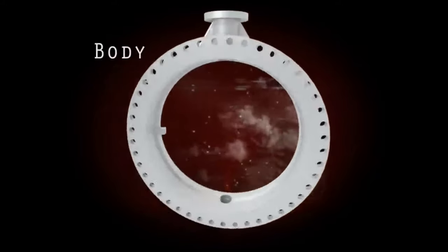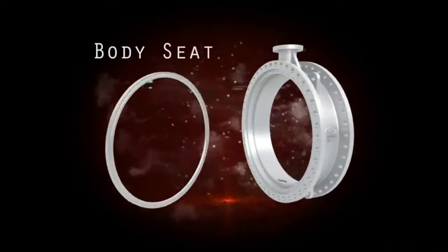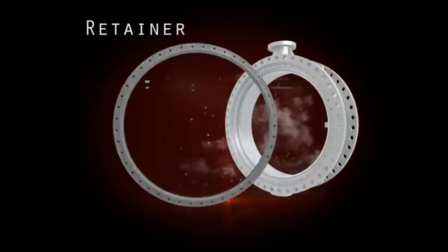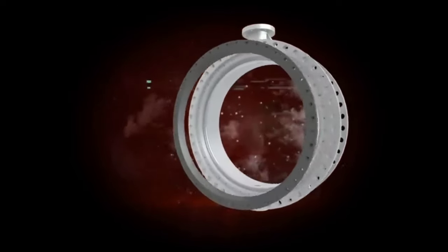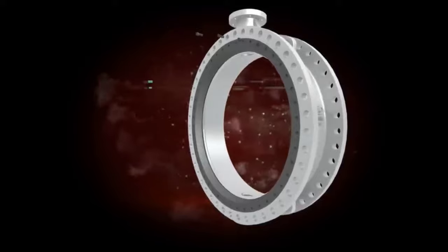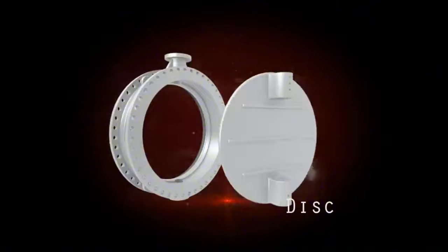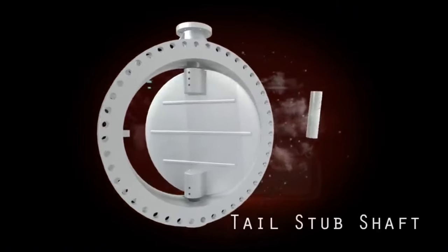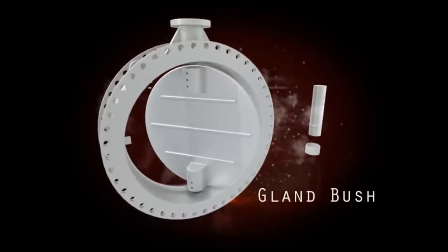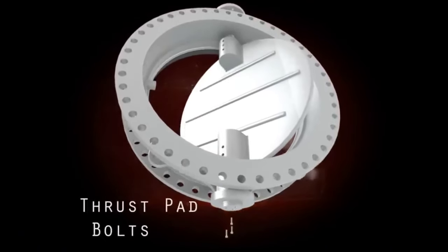Body. The valve body is the nerve center of the automatic transmission. Body seat. Retainer. Retainer bolt. Disc. Tail stub shaft O-ring. Gland bush. Thrust pad. Thrust pad bolts.